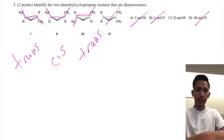So just something to kind of gain from this question is that cis and trans isomers are always diastereomers. That doesn't mean that diastereomers will always be cis and trans, but cis and trans will always be diastereomers.